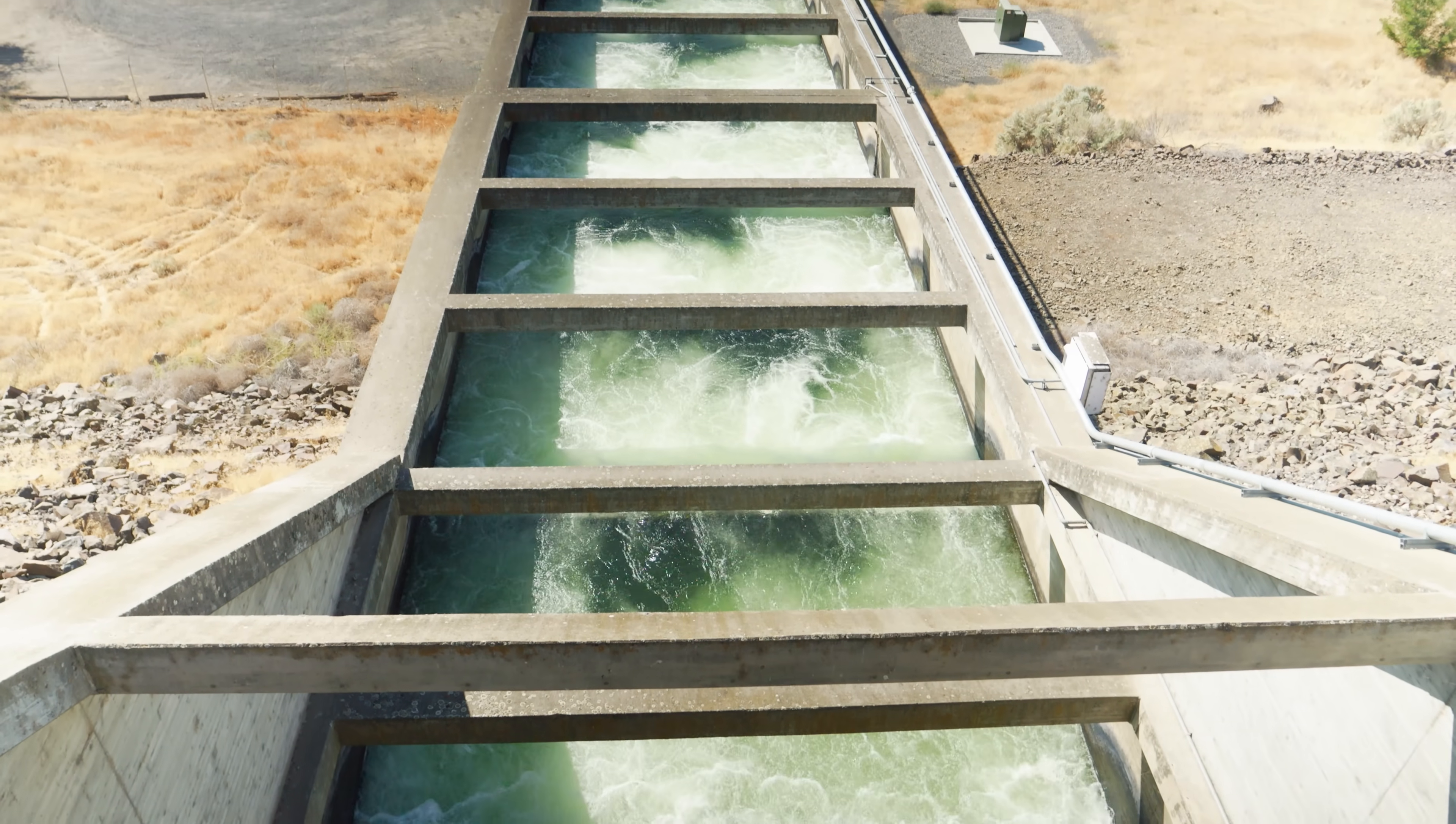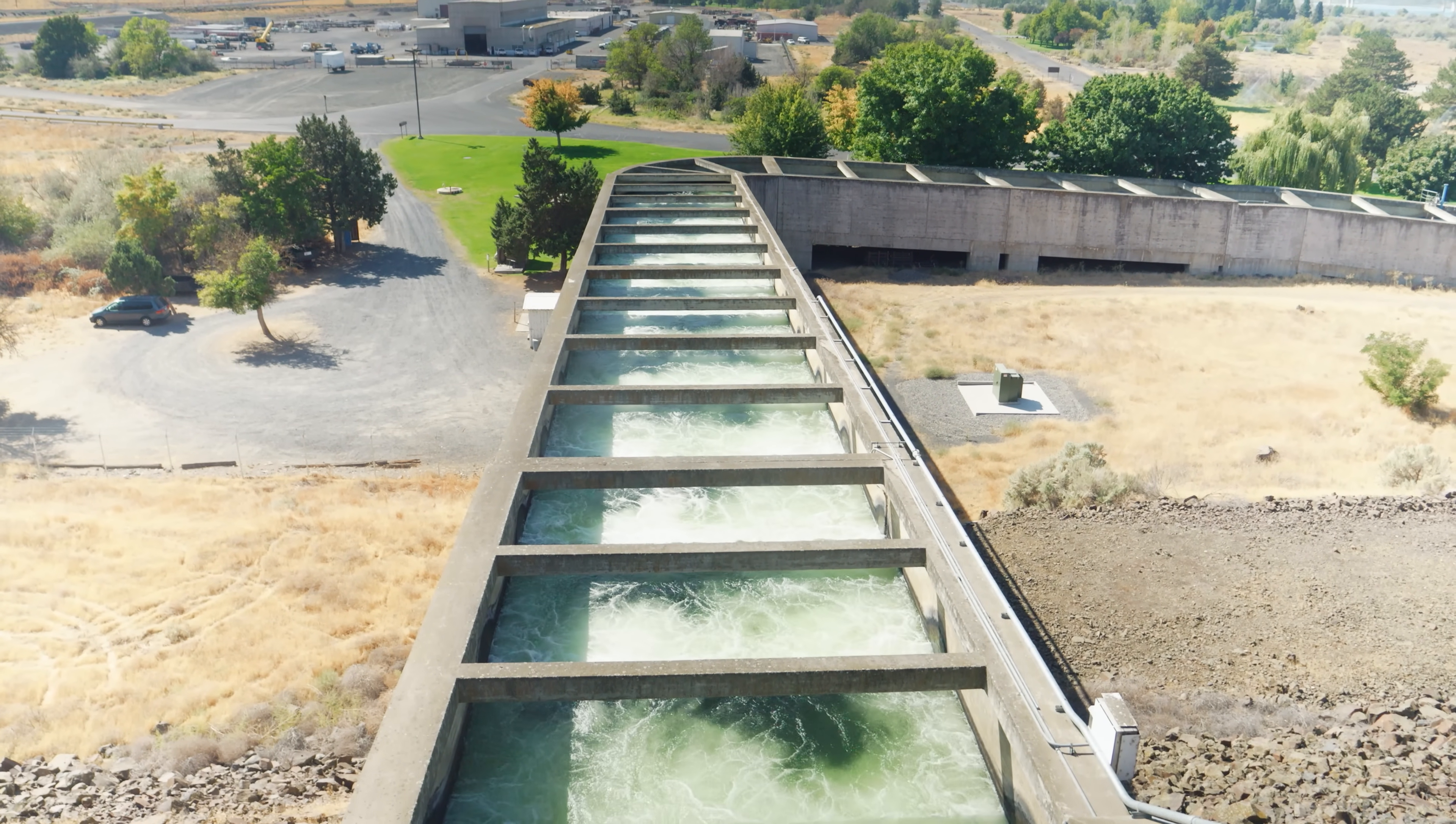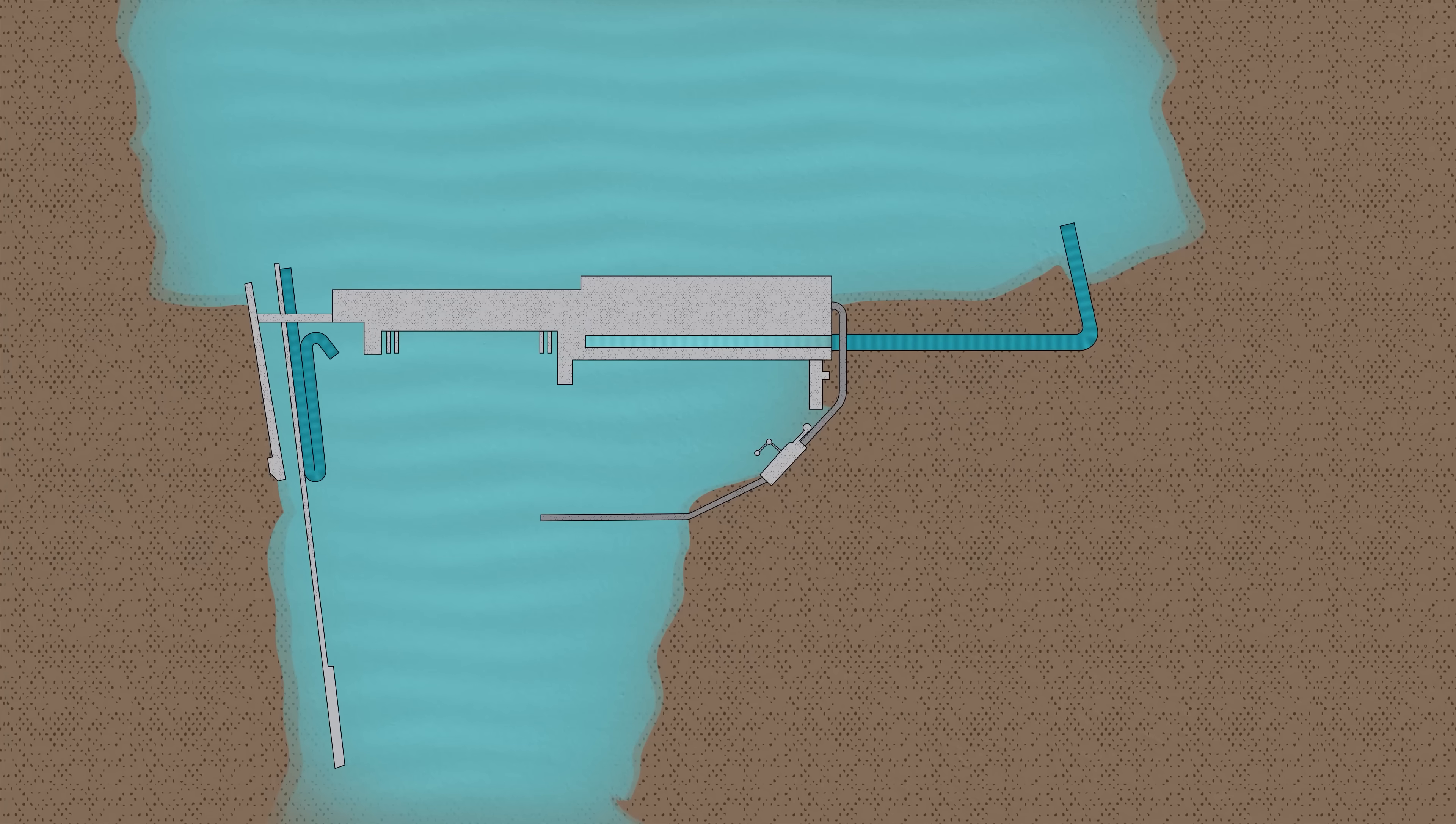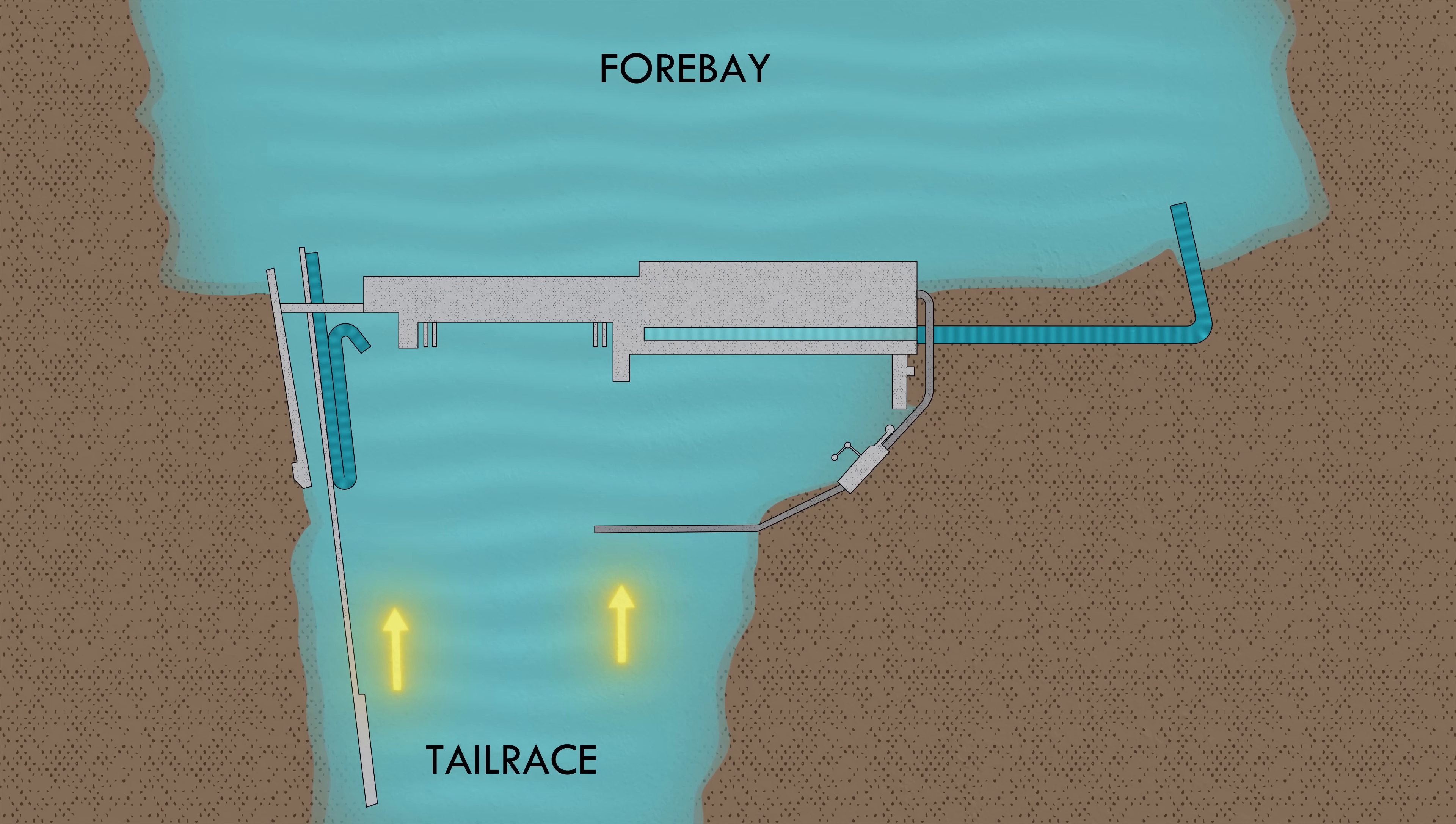You've probably seen a fish ladder before, but if you haven't, this one on the Oregon side of McNary Dam is just one of many designs. The way it works is simple in practice. Adult fish swim upstream toward the dam. The goal is that they don't even realize the dam is there. They simply continue upstream through the fishway and out into the forebay on the other side.